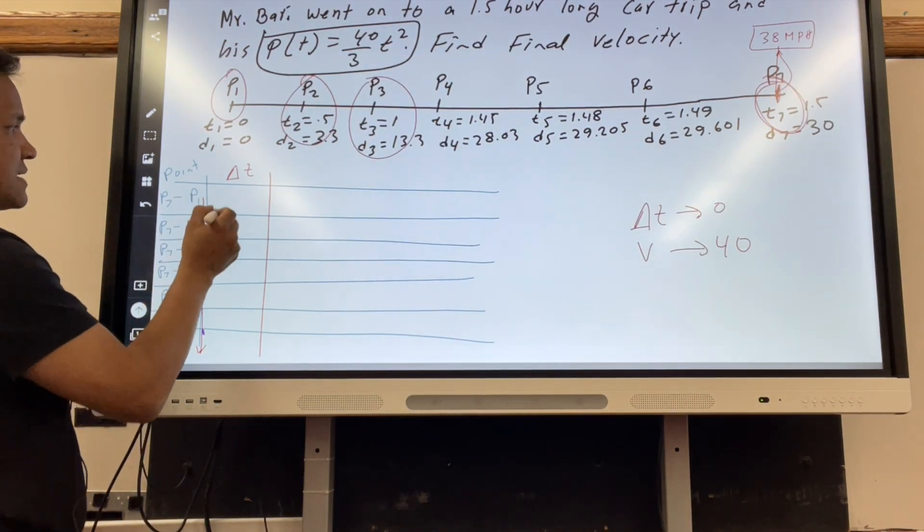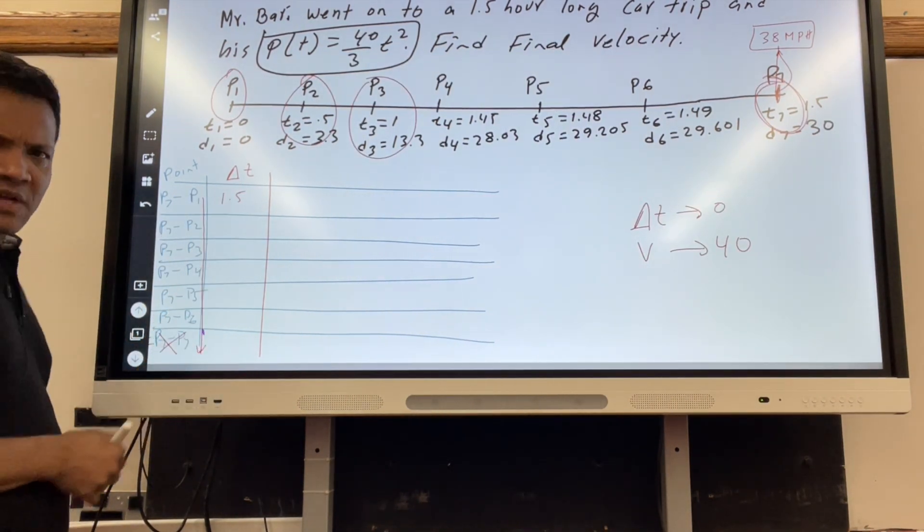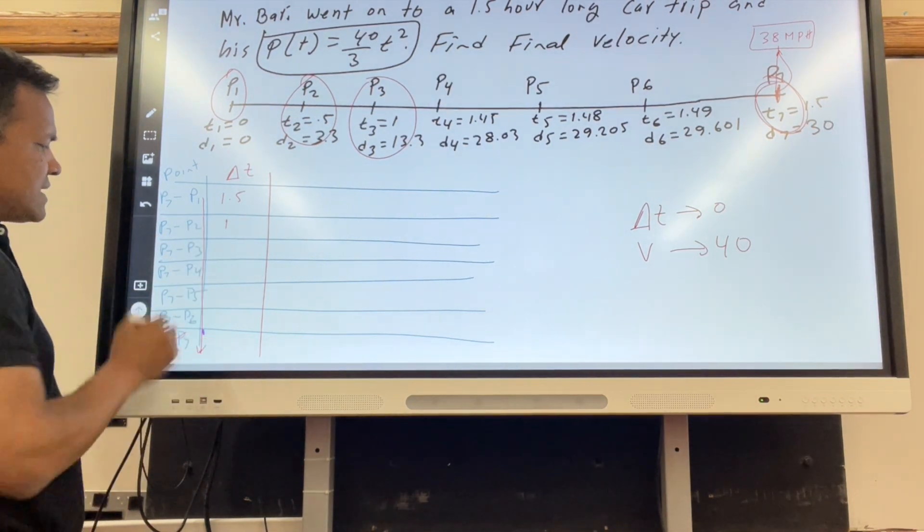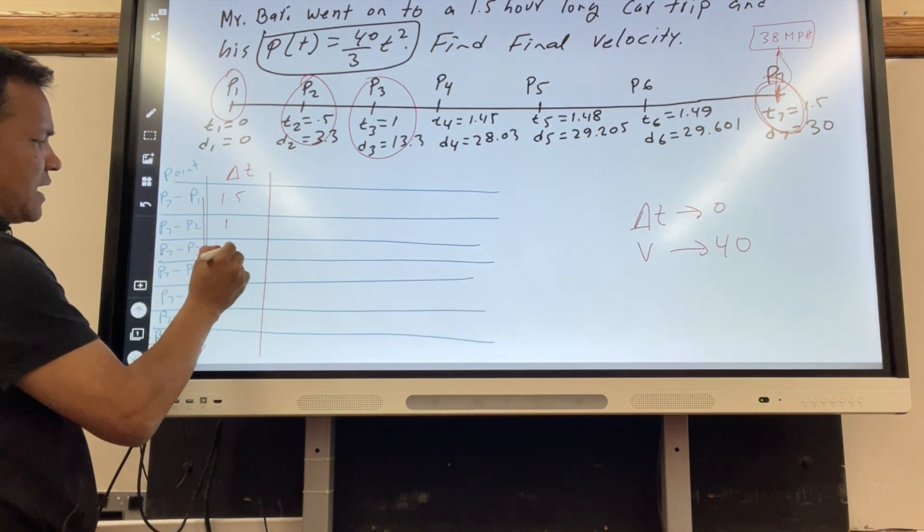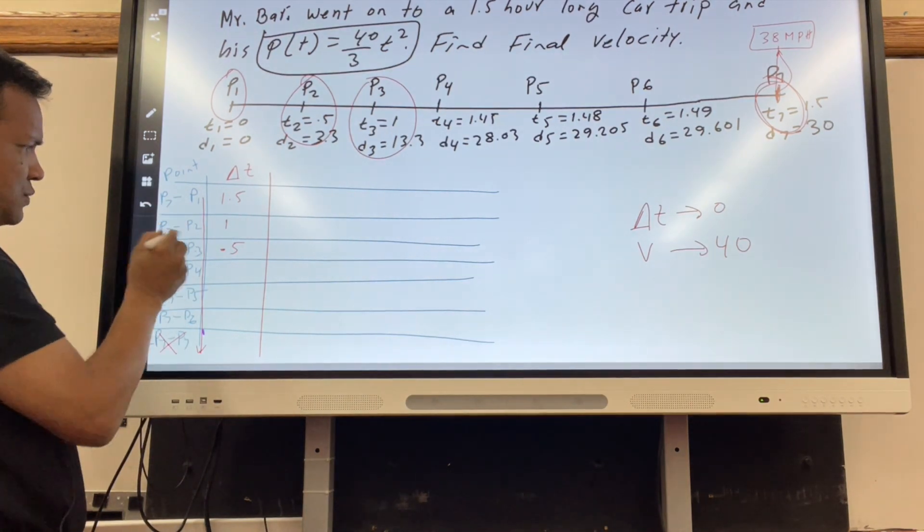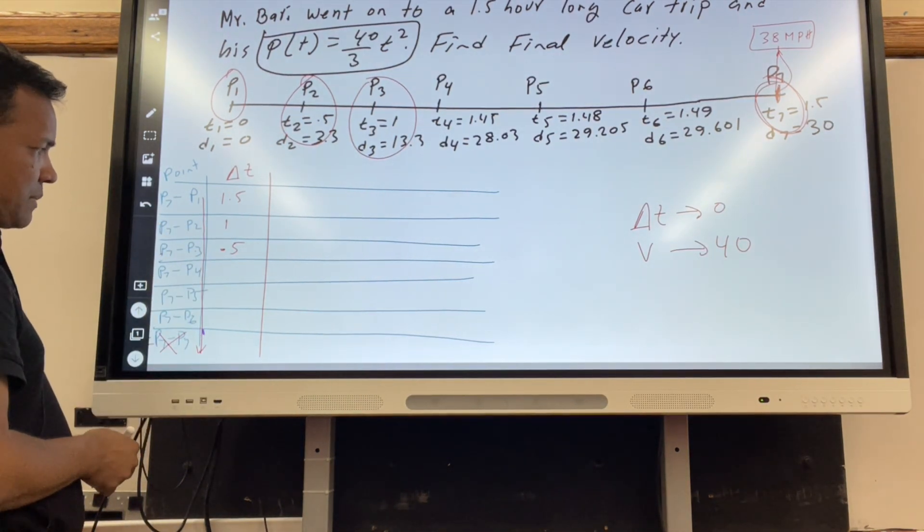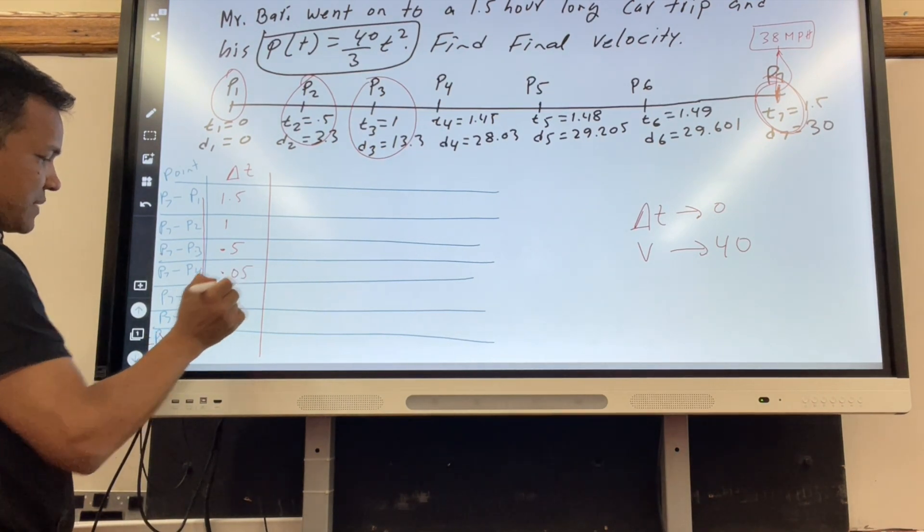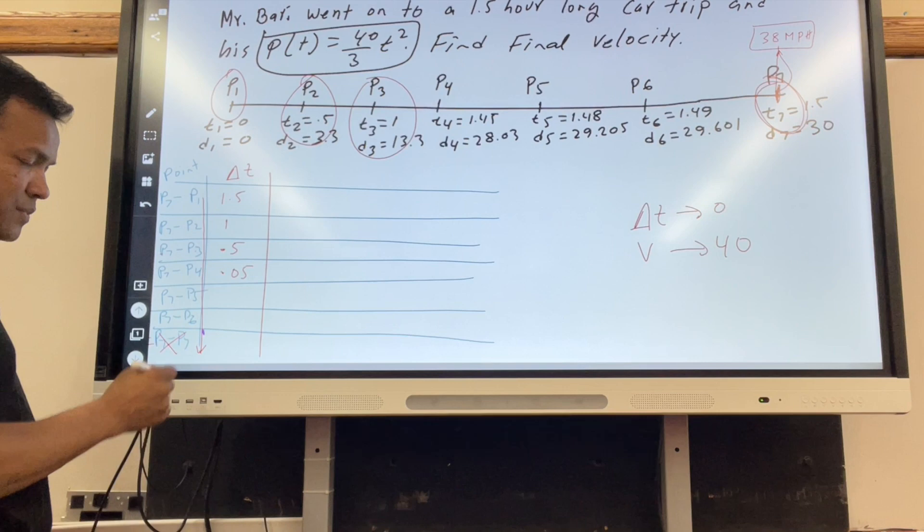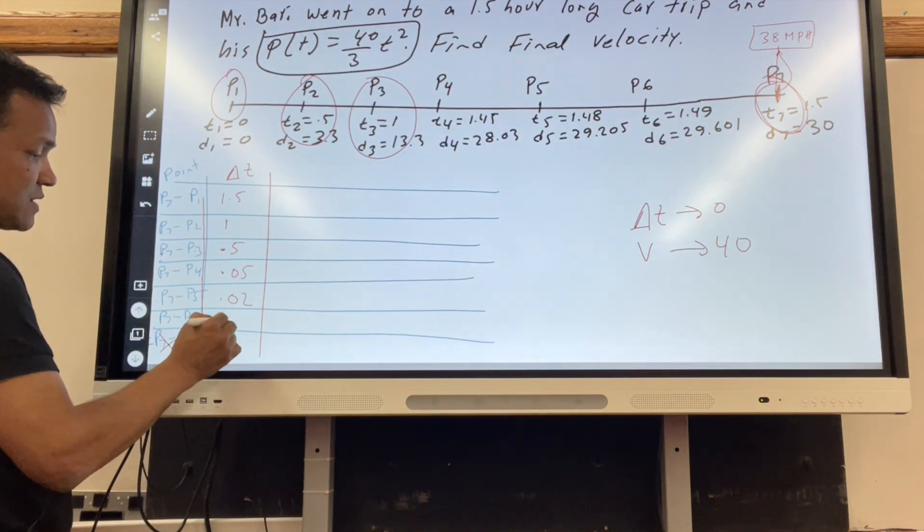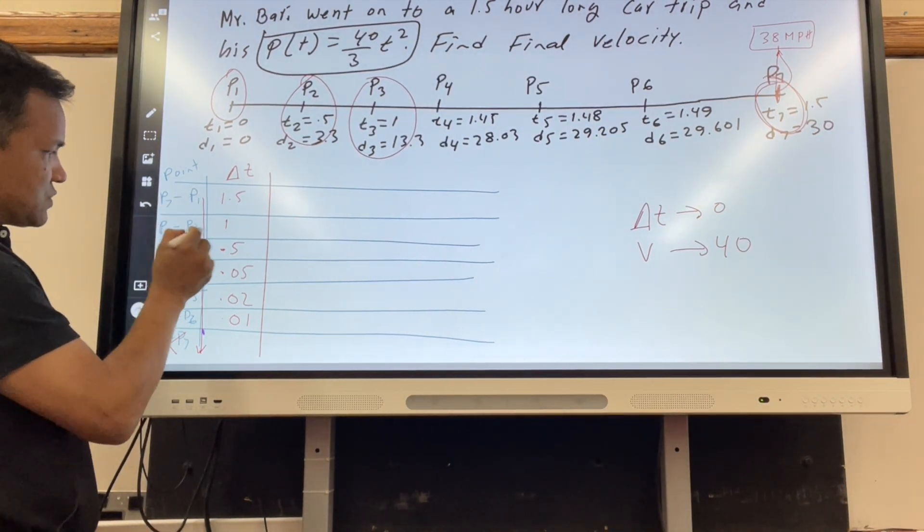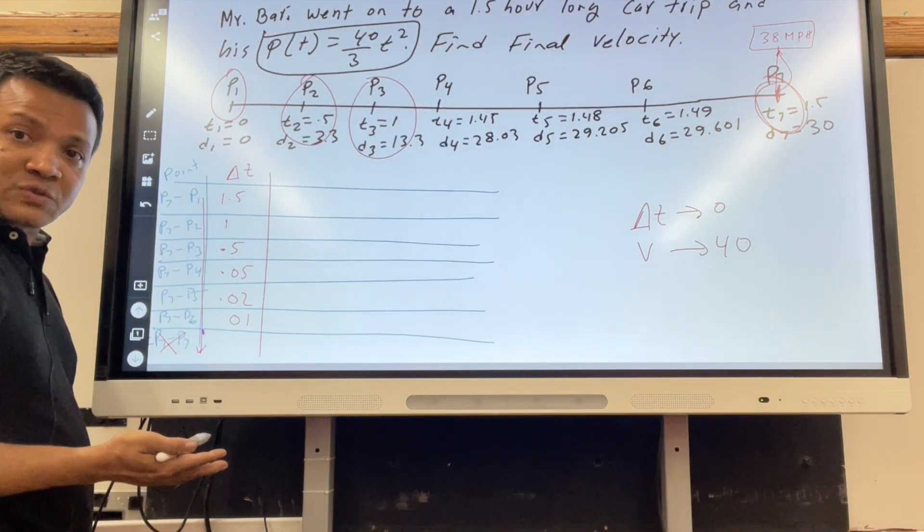Is the time going to 0? Let's see, 1.5 - not really. Is the time between these two points going to 0? Maybe, let's see 1. Is the time between these two going to 0? 0.5. This seems like the time is getting to 0 between these two points. Let's make more progress: 0.05, 0.02, 0.01. It seems like the time is getting to 0 between these two points.